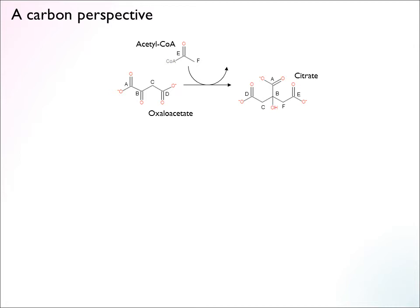Starting from the citrate synthase reaction, I have numbered the oxaloacetate molecule A, B, C, D — four carbons — and labeled the carbons in acetyl-CoA as E and F — two carbons. If we look carefully at this reaction and figure out which carbons go where, the carbons from acetyl-CoA end up in one part of citrate — so E and F are joining the cycle — whereas the carbons from oxaloacetate end up in another part, though they are a bit jumbled up.